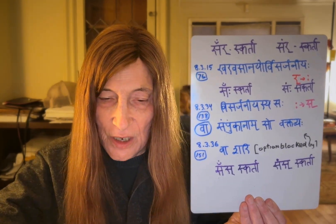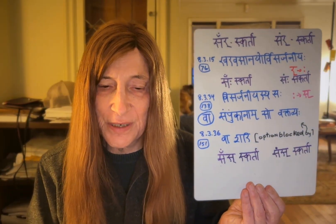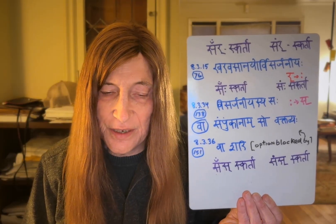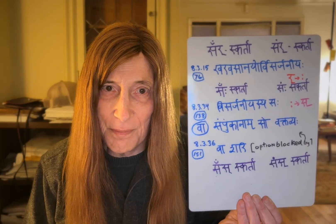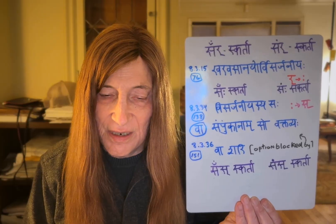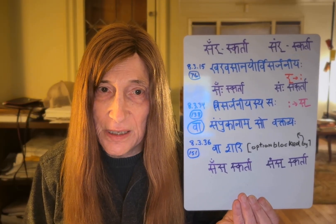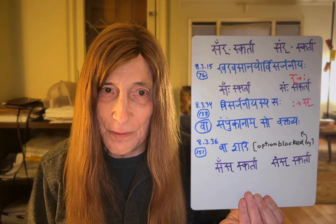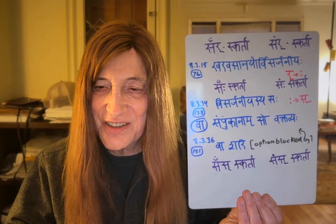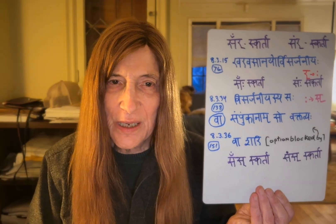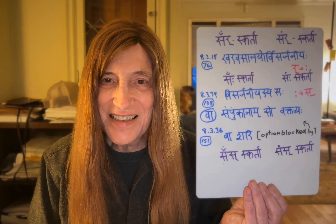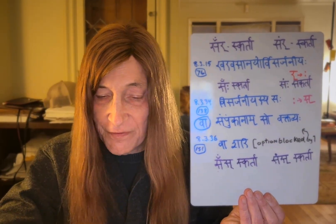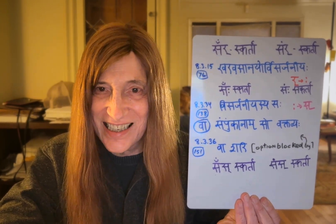This is followed by another sutra: 8.3.34, number 135 in Siddhanta Kaumudi — sarjaniyasya saha. When kar follows, in place of the preceding visarga, anunasaka shall come. This will ultimately generate two forms of sas: one with anunasaka and one with anuswara. However, as is so often the case, things are not quite that simple, because we have to anticipate another sutra coming up a bit later — vashari.